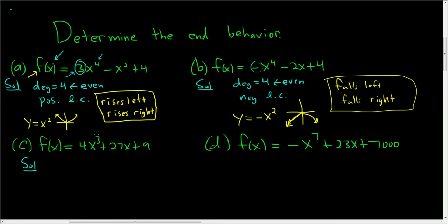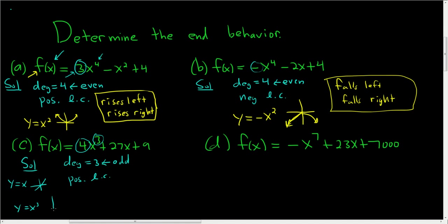Here the degree is 3, which is an odd number, so we have a function with odd degree. The leading coefficient is 4, so we have a positive leading coefficient. The simplest functions with odd degree and positive leading coefficient are y equals x or y equals x cubed — both look like this and both fall left and rise right. So the answer in this case is falls left and rises right.